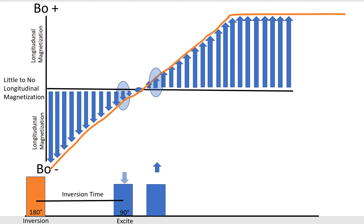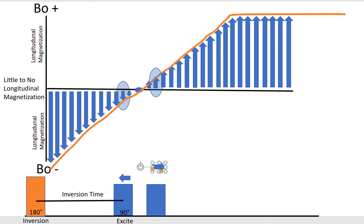Whether we are slightly too early or slightly too late relative to the null point, the signal intensity will be the same, so long as we are not sensitive to the direction within the transverse plane — this is called magnitude reconstruction, as opposed to phase-sensitive reconstruction. Both areas equidistant from the null point produce the same signal intensity because both are flipped into the transverse plane by the 90-degree excitation.